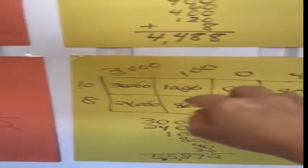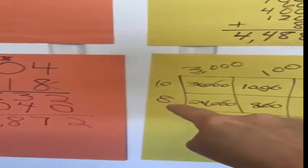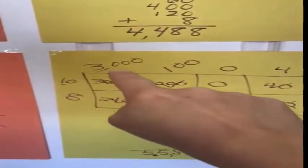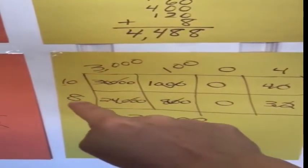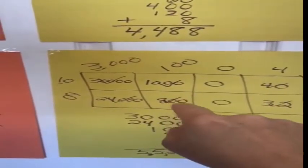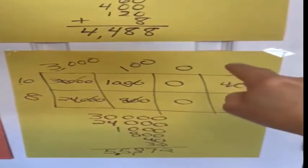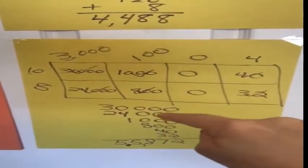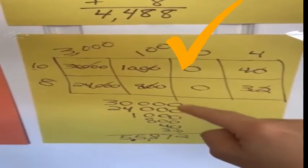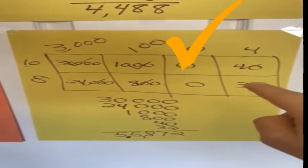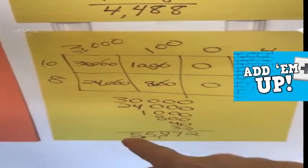To do it the array way, I take 3104 and break it down into three thousand, one hundred, zero, and four. My other number is 18, broken down into ten and eight. The boxes are ten times three thousand, ten times one hundred, ten times zero, and ten times four; then the eight row: eight times three thousand, eight times zero, and eight times four. I check off each box as I write the values: three hundred thousand, twenty-four thousand, one thousand, eight hundred, forty, and thirty-two. Adding those up gives fifty-five thousand eight hundred seventy-two.